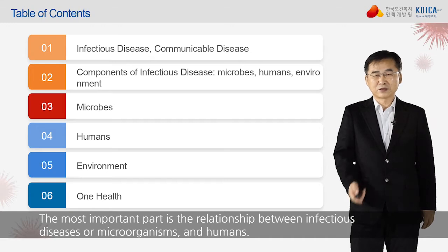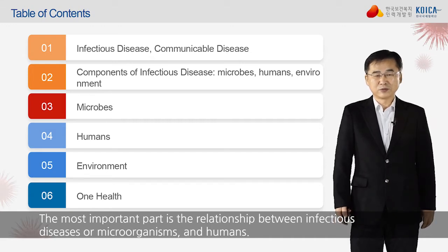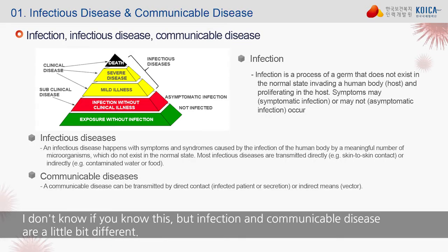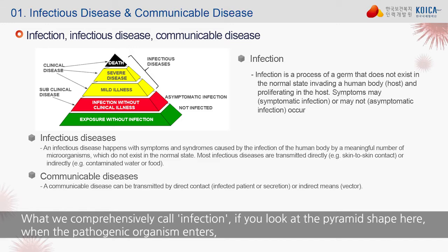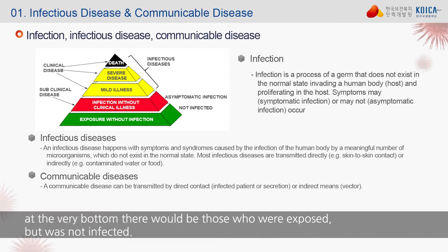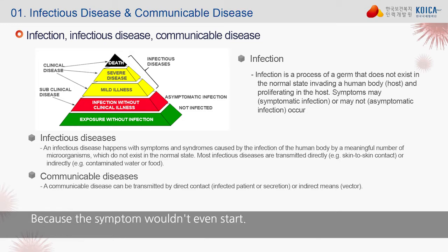The most important part is the relationship between infectious diseases or microorganisms and humans. Infection and communicable disease are a little bit different. What we comprehensively call infection — if you look at the pyramid shape here, when the pathogenic organism enters, at the very bottom there would be those who were exposed but not infected. They are not patients, because the symptoms wouldn't even start.